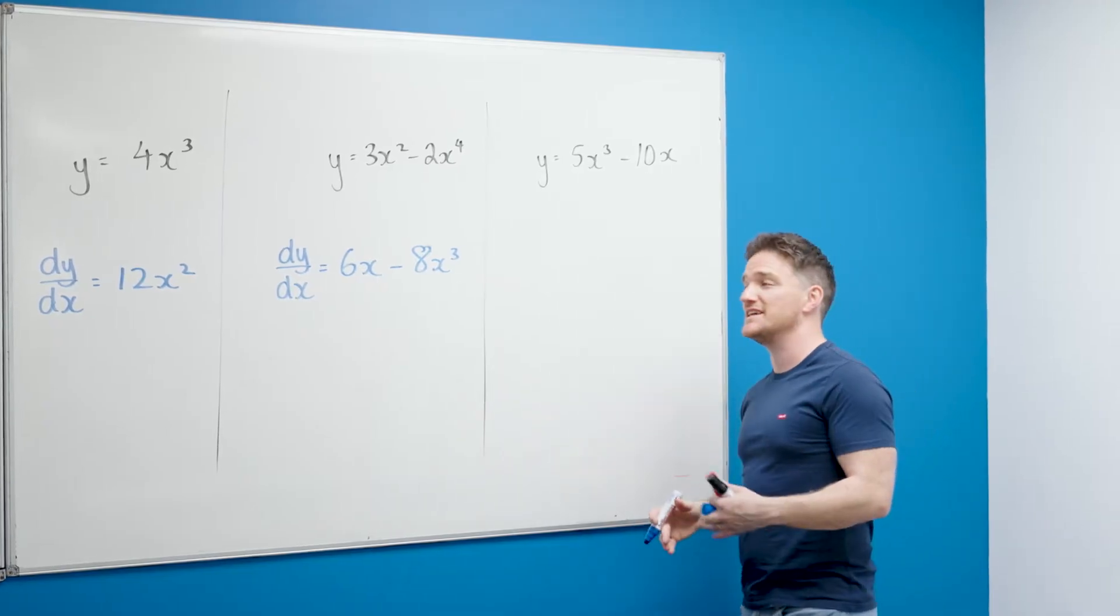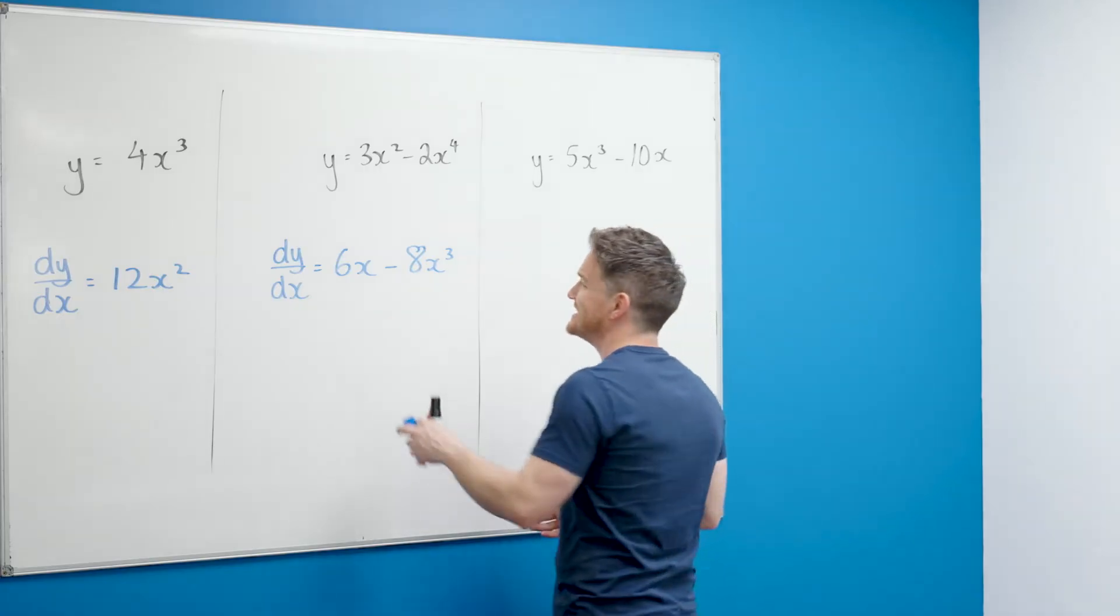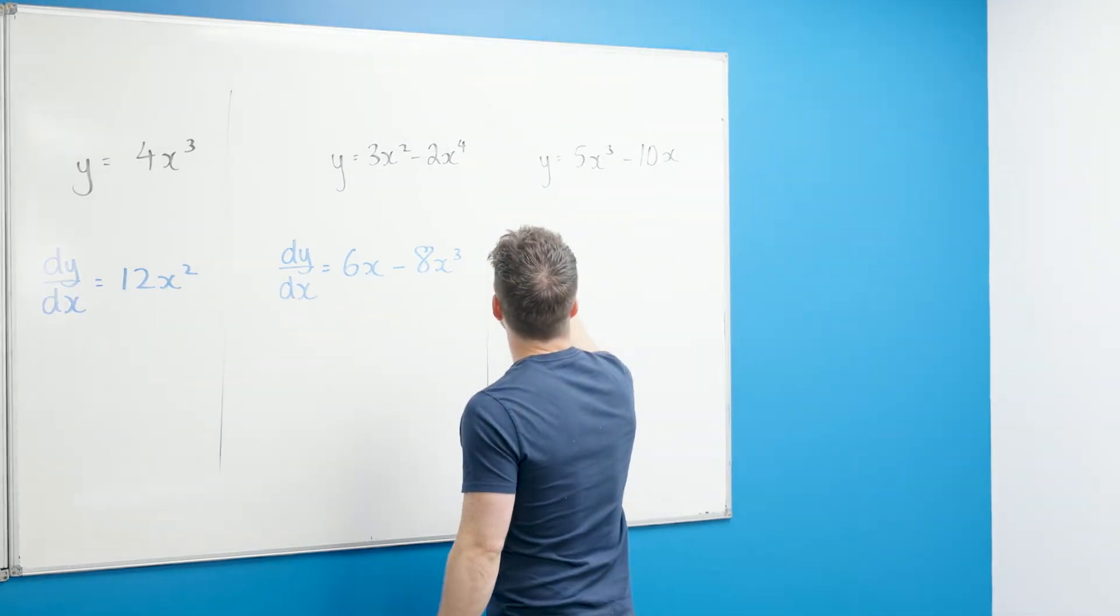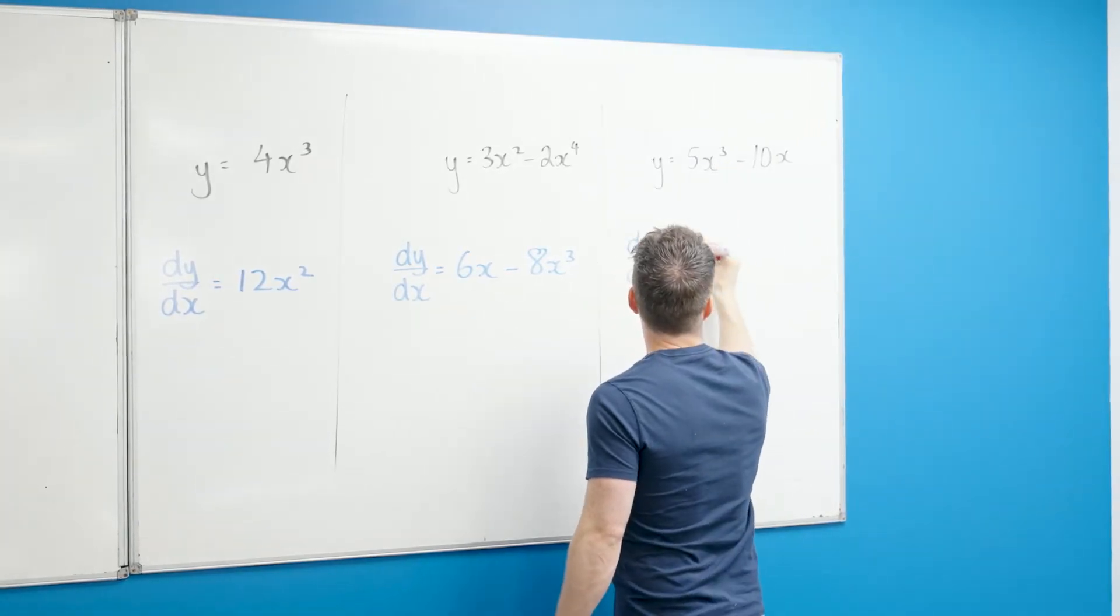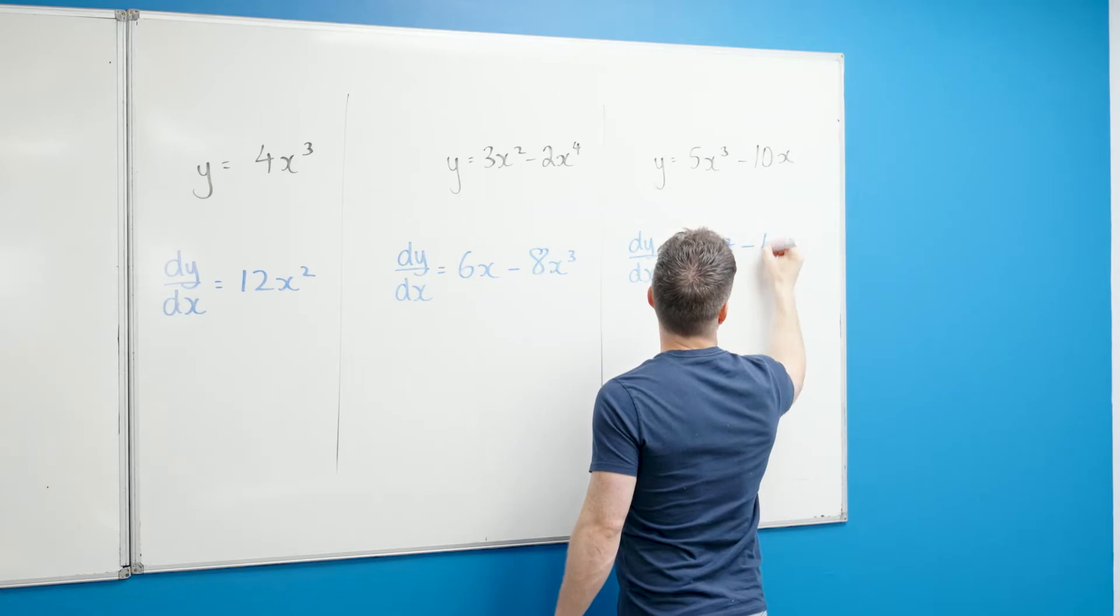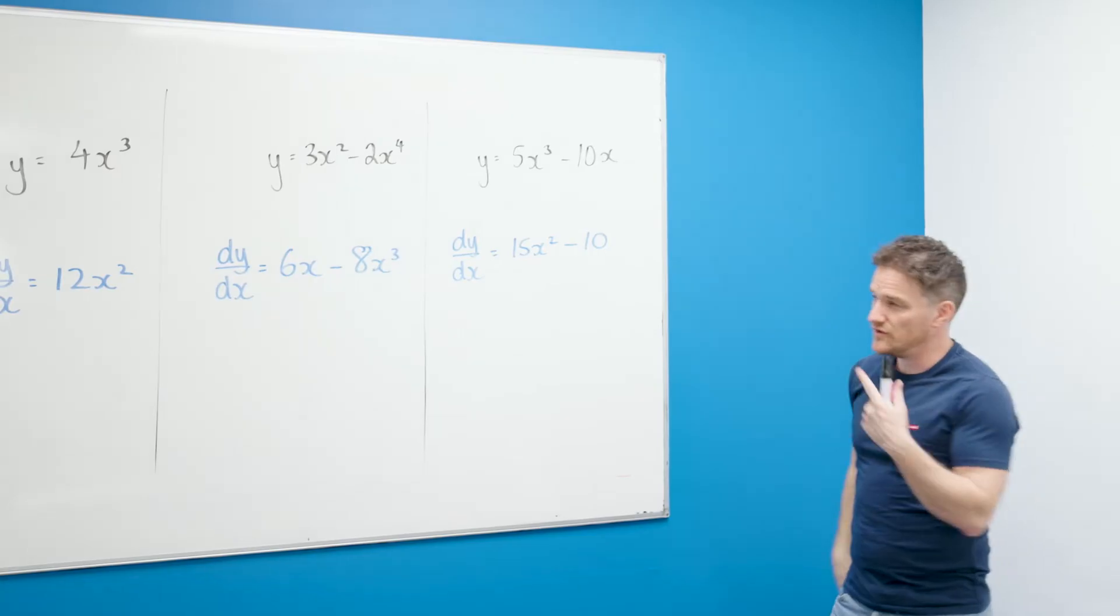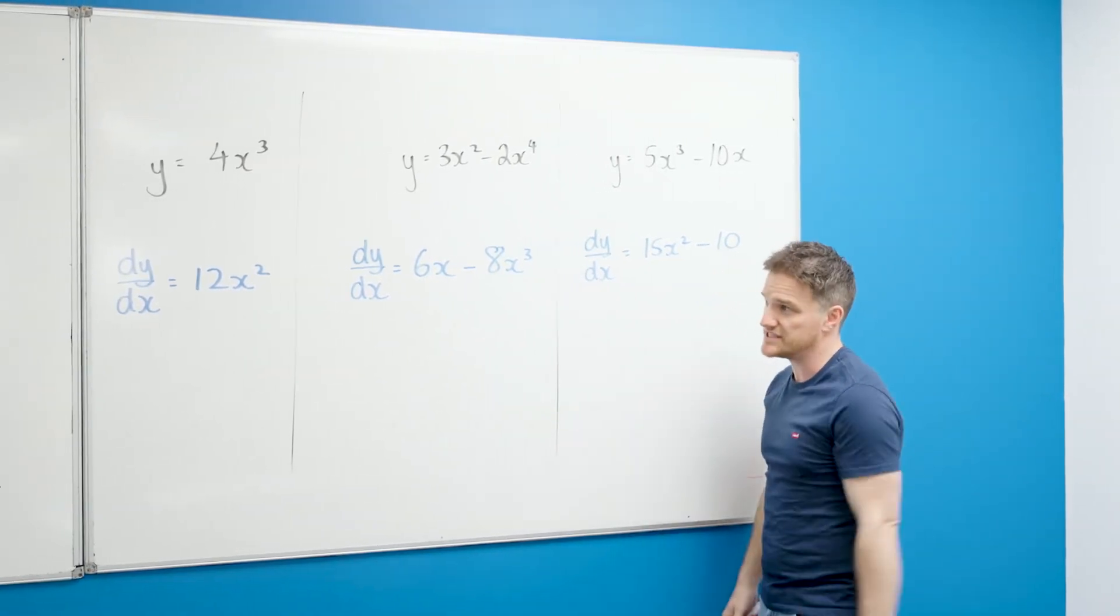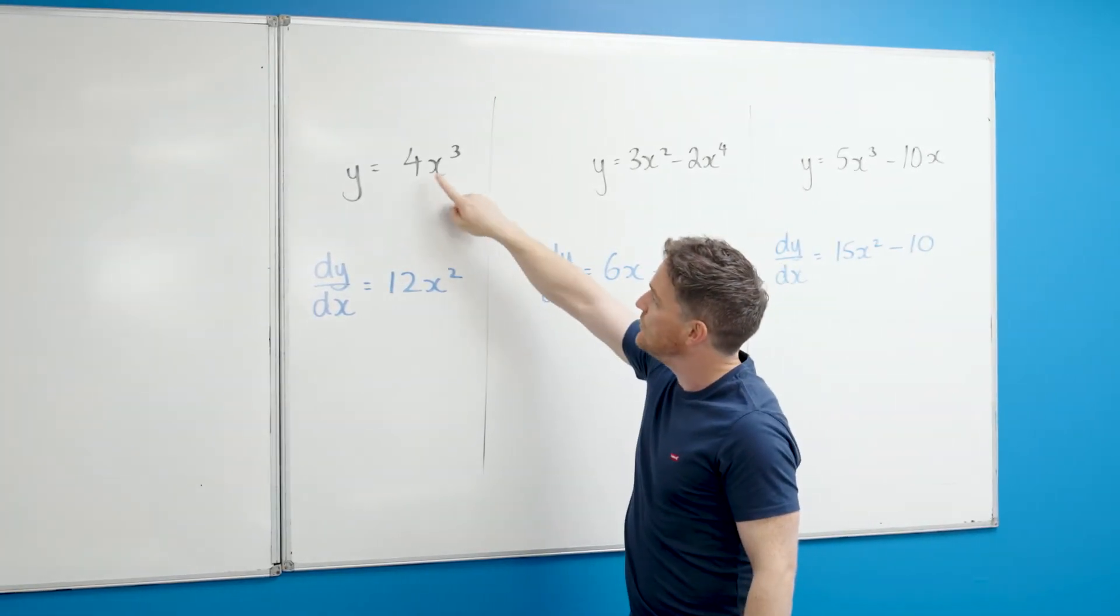Finally, I'll give one more. You might start to see the pattern now. Take a moment—try to see if you work out the next one before I do it, but this one's going to be dy/dx equals 15x squared minus 10. First and foremost, what you've just done, or what I've just done, is differentiate. It's the process of differentiation.